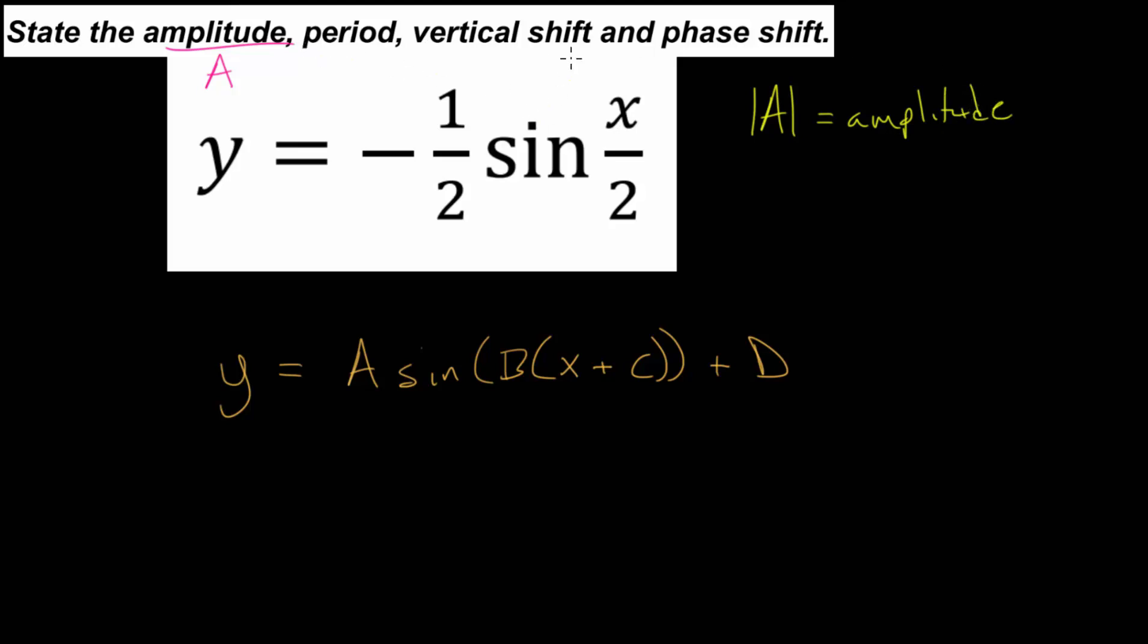We can say that our period is this coefficient b. We can say that b is related to the period. And really, we should be a little bit more careful. It might be better to say that the period is equal to 2 pi over that constant b, which will be the coefficient on x in the input.